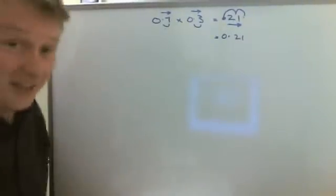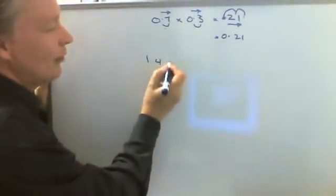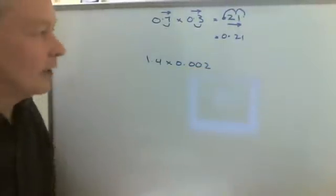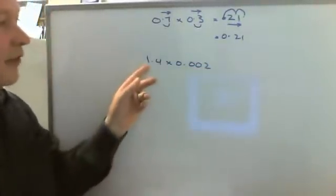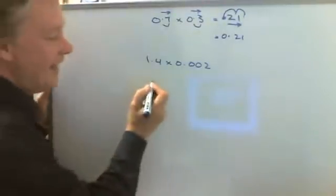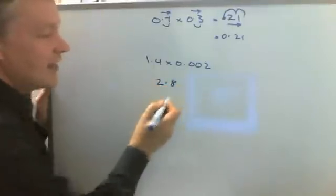Okay, so let's say we have something like 1.4 multiplied by 0.002. Well in this particular case, I know that 1.4 times 2 is 2.8, so I'm going to write 2.8 there.